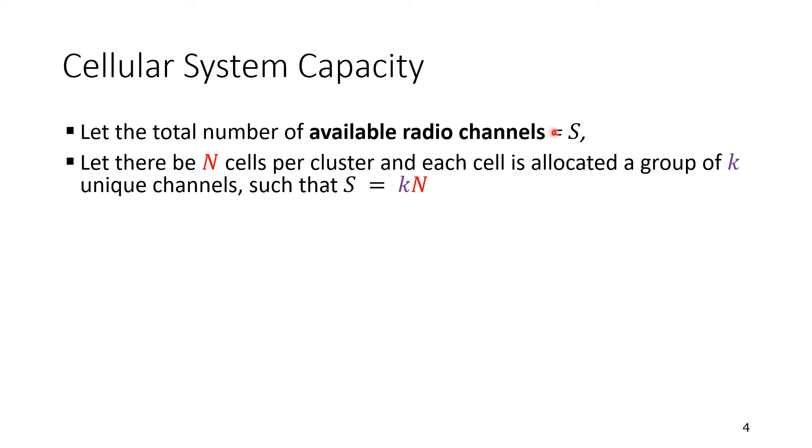Cellular system capacity. Let the total number of available radio channels be capital S. Another variable, capital S is the total number of radio channels. Remember that now we're not referring to the channel as a medium of propagation. We are dealing with channels here as chunk of bandwidth, a dedicated part of the bandwidth. So let there be N cells per cluster, as we defined before, and each cell is allocated K unique channels. So the available radio channels will be divided. So capital S equal to K times N.